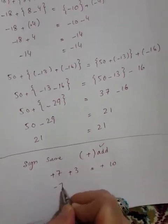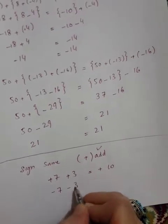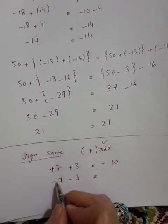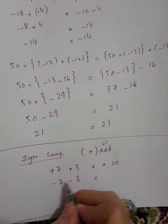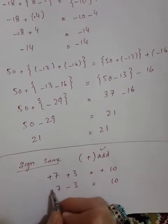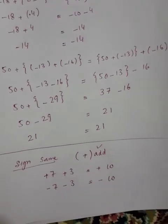If both have minus signs, like minus seven minus three, same sign, you add: seven plus three equals ten, and the sign remains minus. The answer is minus ten.